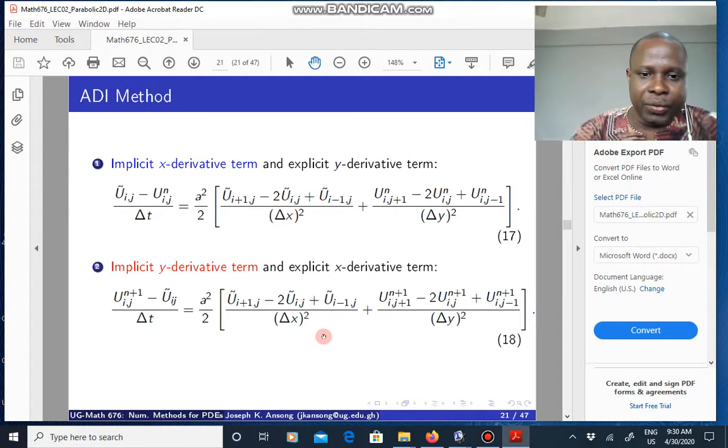We are going to use the Crank-Nicolson scheme to illustrate this. You have, in the first case, an implicit in x derivative and explicit in y. So the U tilde are unknowns, that is why it is implicit in the x. The UNs are known, so in the y it is explicit.